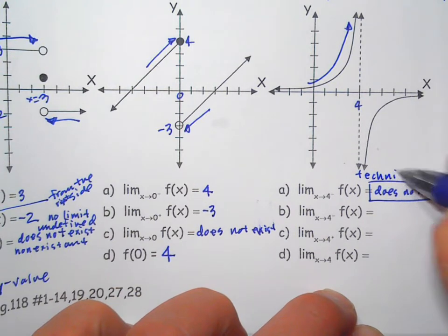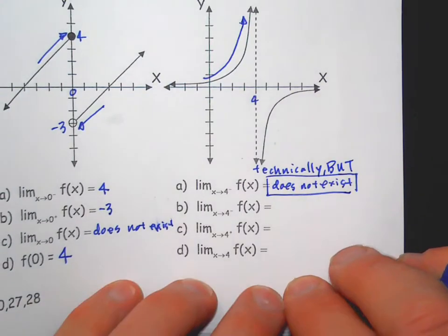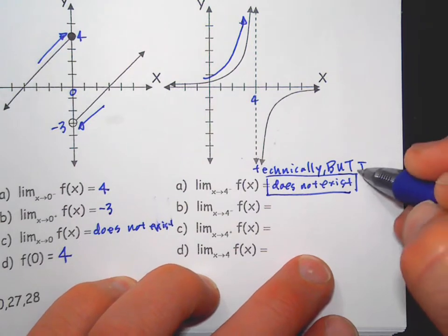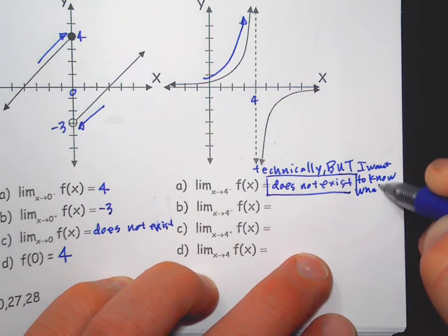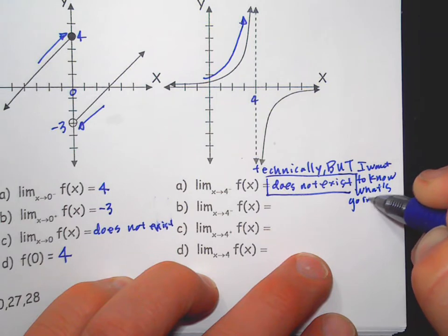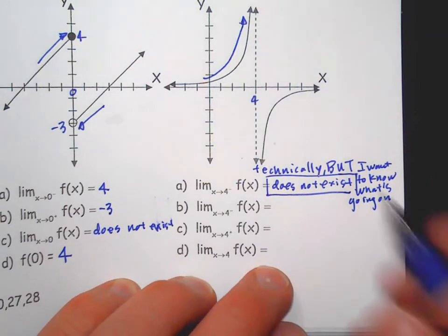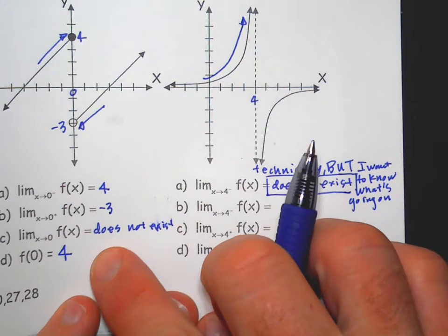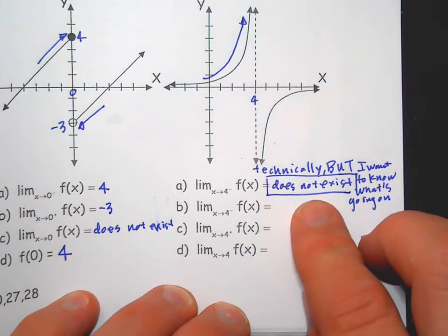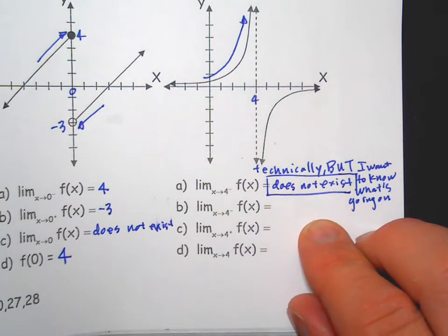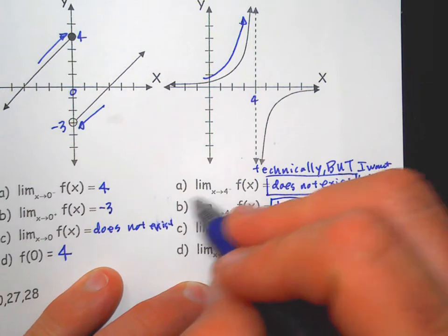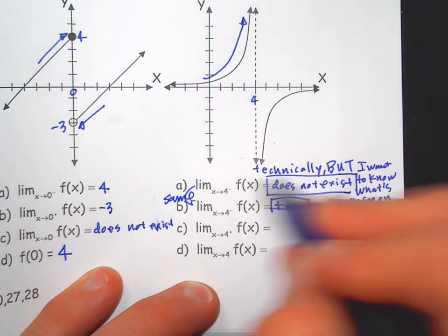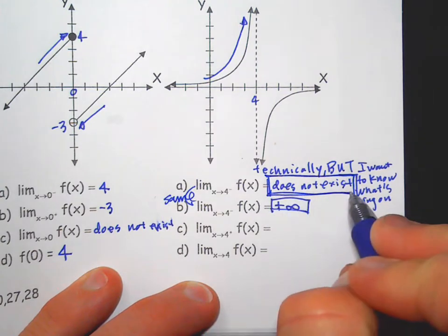Technically, okay, but I want to know what's going on. Which means if it doesn't exist, is it because the two sides don't agree, or does it not exist because it blows up to infinity? Does it go to positive infinity? Does it go to negative infinity? So I actually want you to write positive infinity for this guy. This is the same thing I just rewrote it. This is the technical answer on the AP test. This is a little more informative—not technically correct, but at least it indicates what's going on.